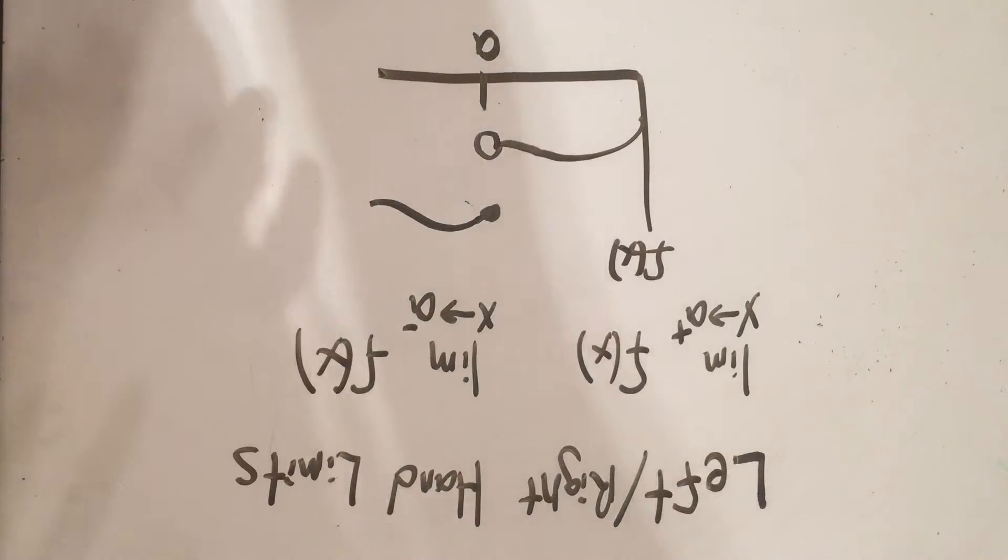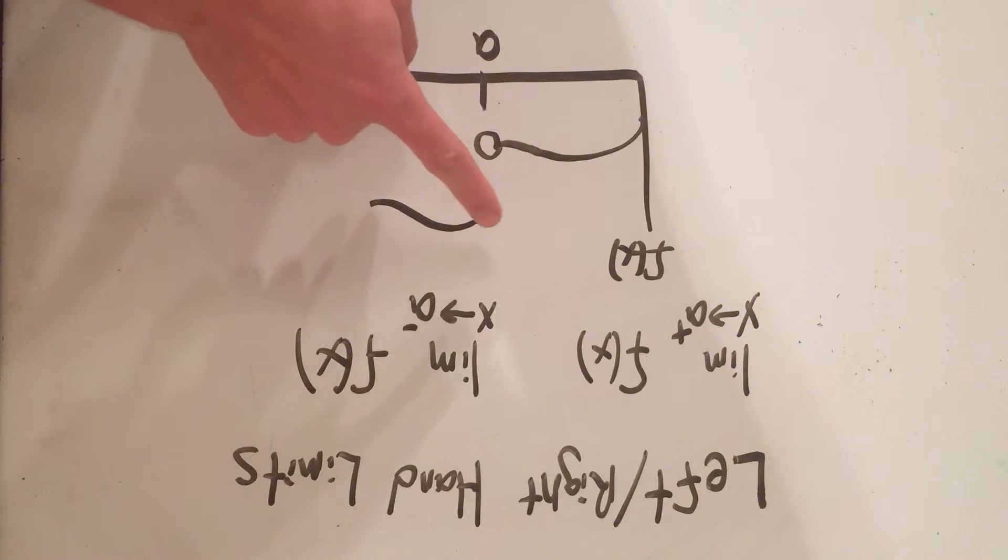So for instance, here's this little picture I've drawn. If I start approaching a in the x-direction coming from the right, I'm going to end up at this little closed dot here.